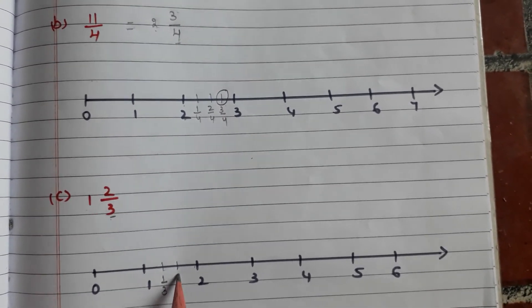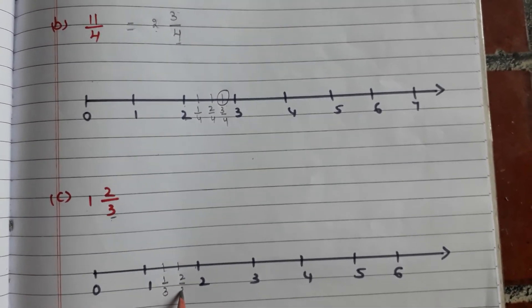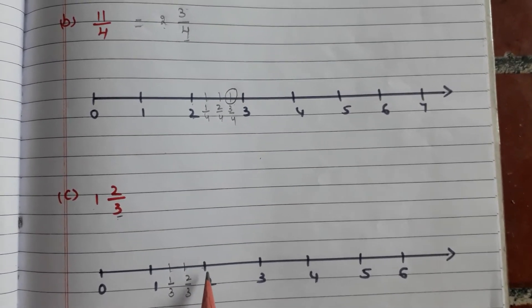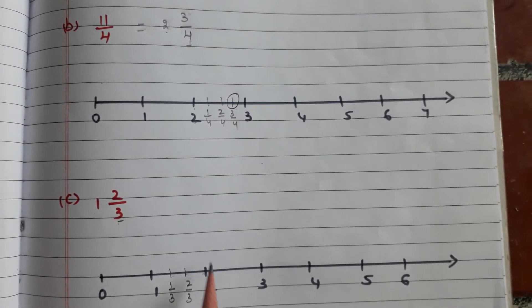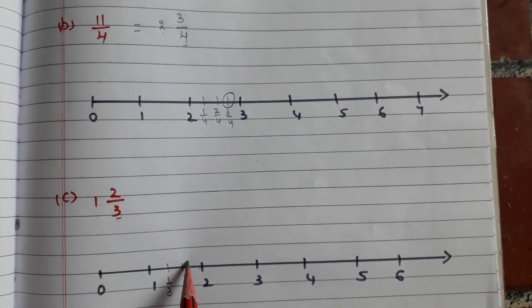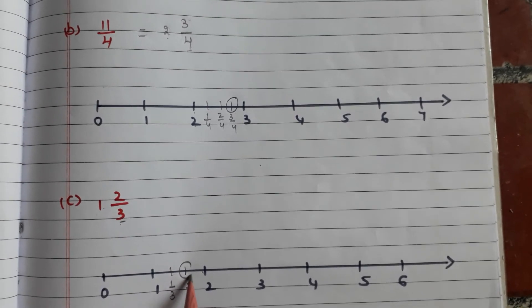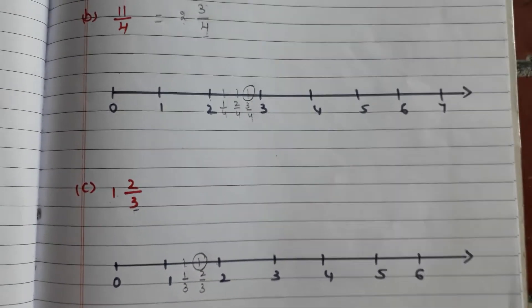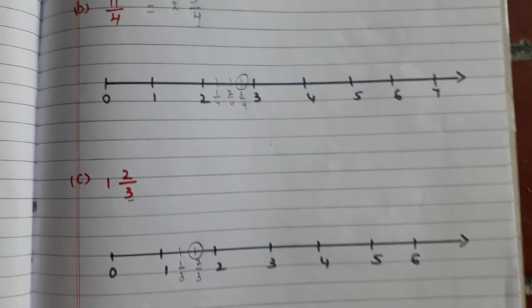This part will be 1/3, 2/3, and this is 3/3 — nothing but a complete whole. So now 1 2/3 will be here on the number line. Like this, we have to place mixed fractions on the number line.